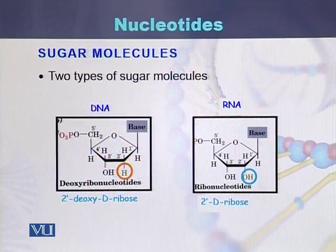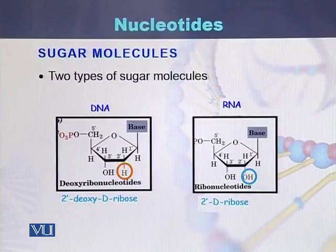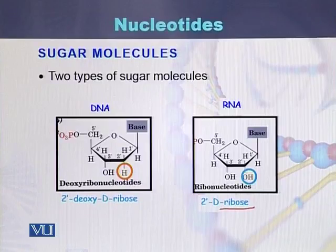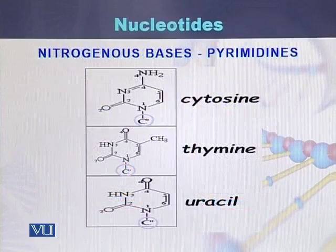Within the nucleotide there are two types of sugar molecule. The sugar molecule present in RNA is called ribose sugar, while the sugar molecule present in DNA is called deoxyribose sugar.